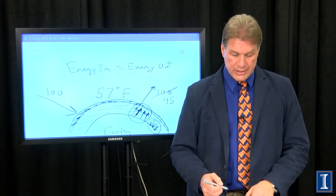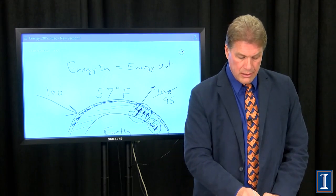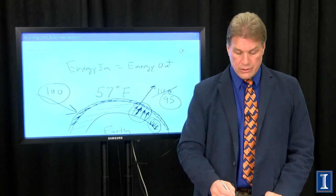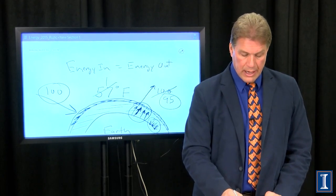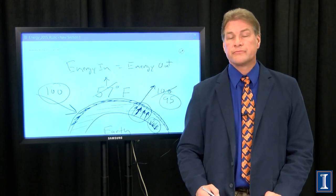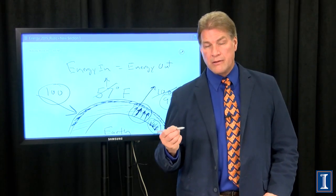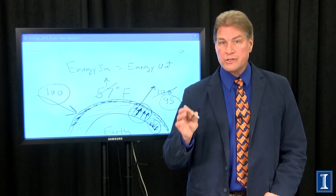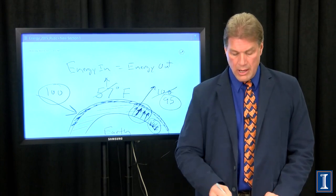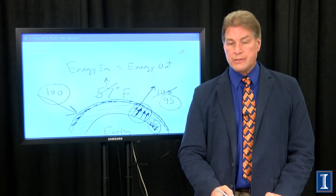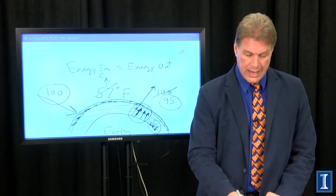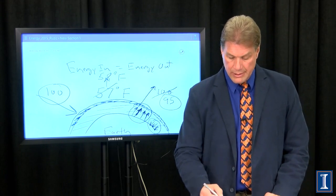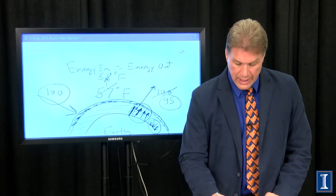When we do that, all of a sudden, energy in is greater than the energy out. So the temperature of the planet has to go up. Since the planet and every other body radiates out energy proportional to the temperature to the fourth power, a small temperature increase, maybe to 58 degrees in this particular example, means that more energy is now coming out.